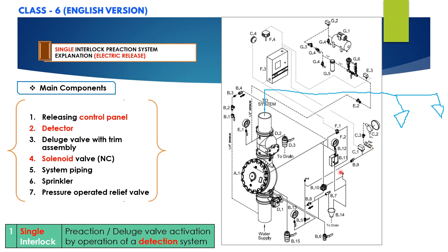To operate this pre-action system manually, there is an emergency release visible on the schematic diagram. Anytime the handle inside this emergency release is pulled, pressure is released from the priming chamber, water flows through the emergency release, and the deluge valve opens. Water will flow into the system piping and alarm devices will be activated; if a sprinkler head opens, water will flow from the system.